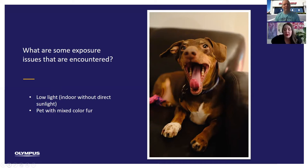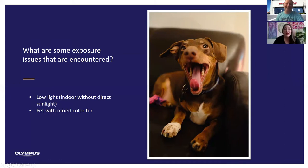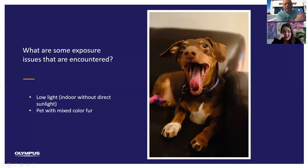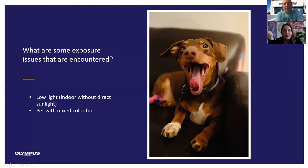Pets with mixed color fur are difficult. One of the best examples I have for this is photographing a bald eagle — it's hard to expose for the white head and the really dark brown feathers. My best advice there is, depending on what mode you prefer to shoot in, let's say you're shooting in aperture priority and you have your aperture set the way you want, like F4.